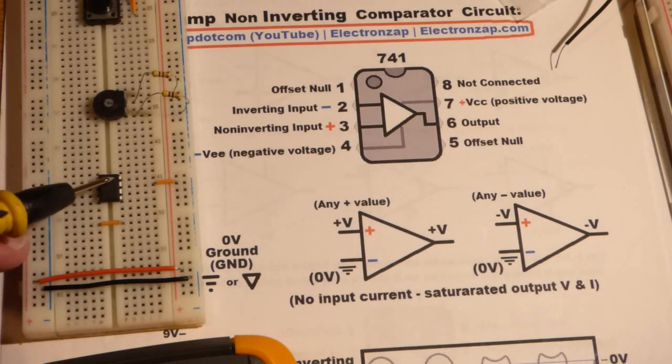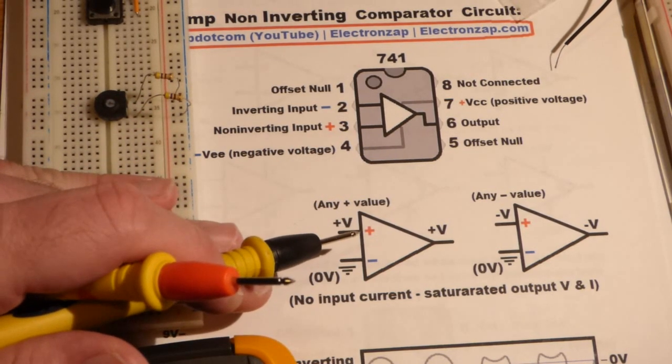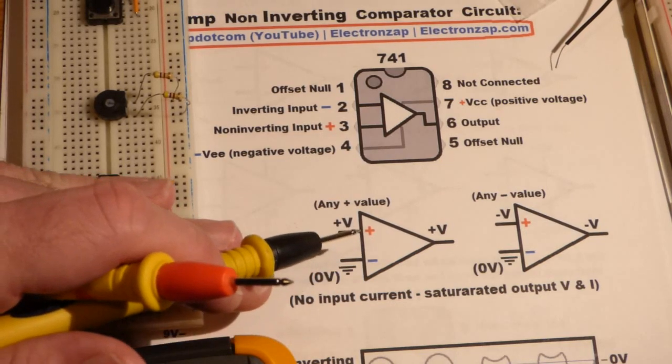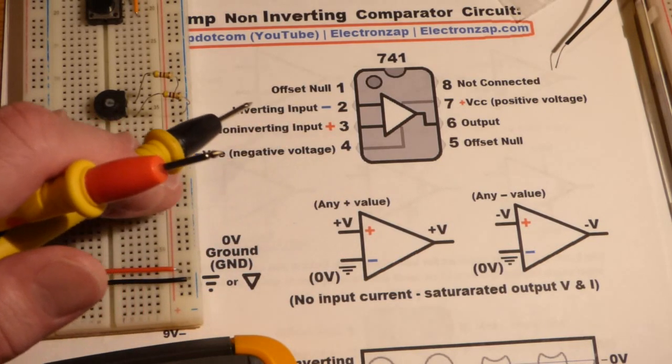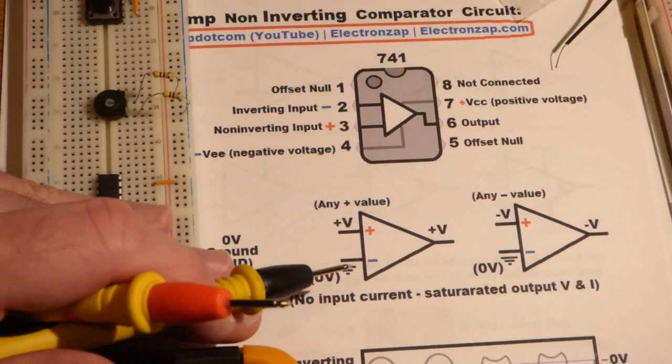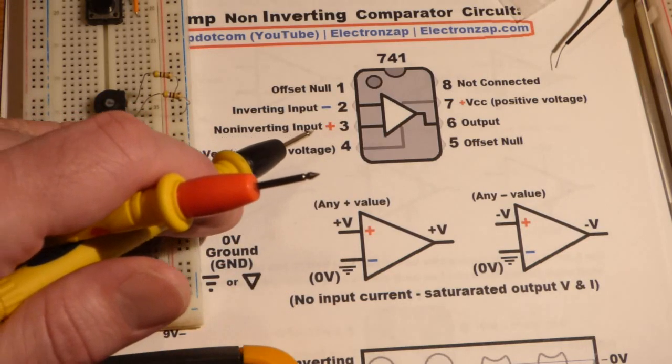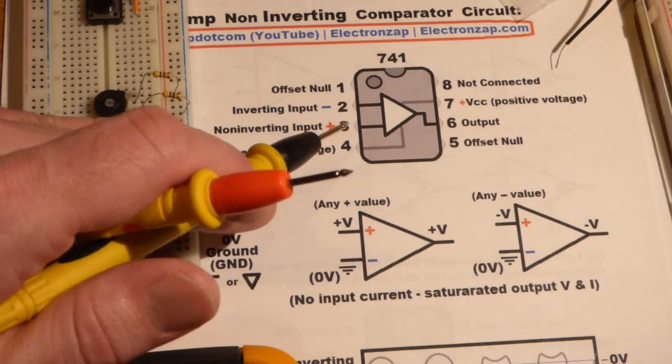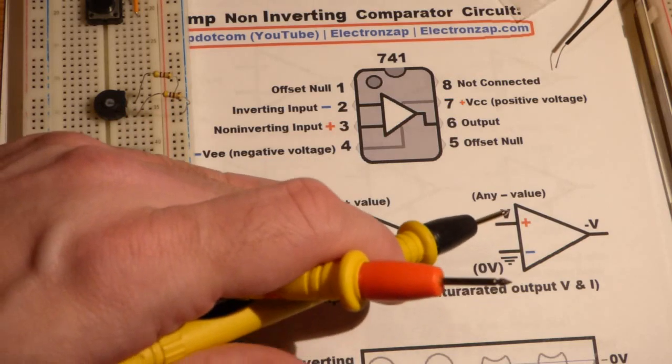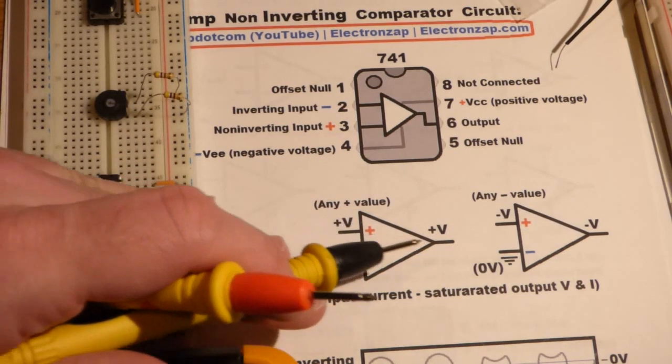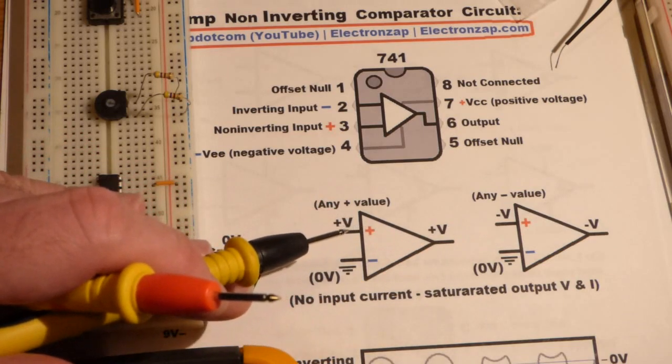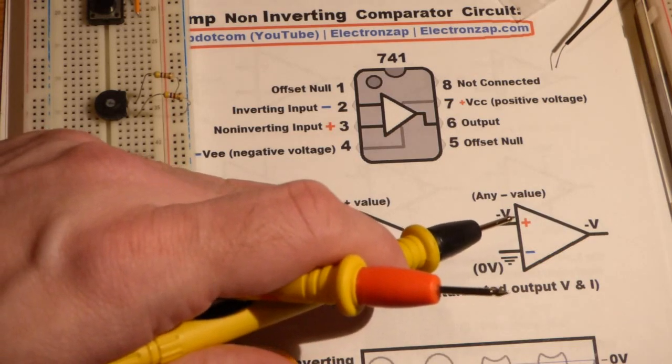We're going to take the 741 op-amp and give a voltage to pin 2 and pin 3. Pin 2 is the inverting input, and pin 3 is the non-inverting input. Pin 3 is going to be the one that we're changing the voltage to, and that's generally how I see people draw them out. The one that's going to be changed is put on top.